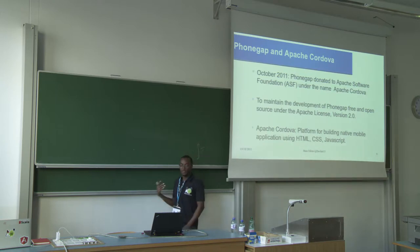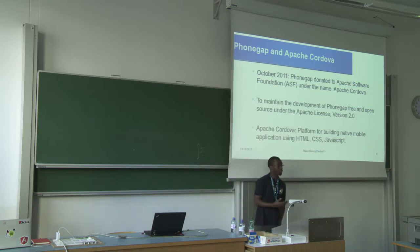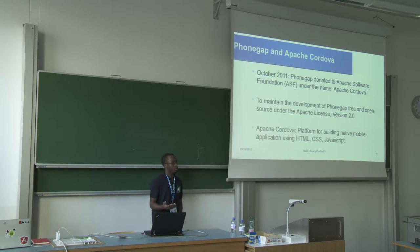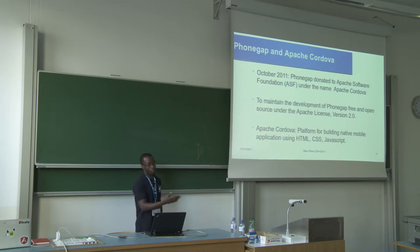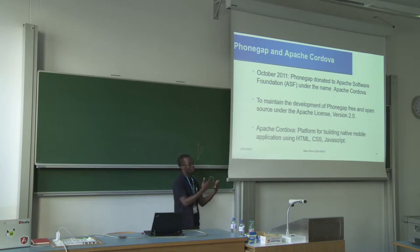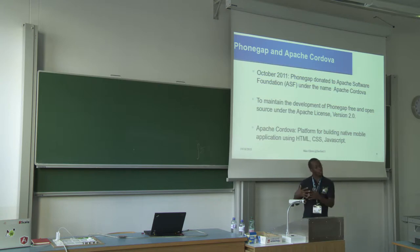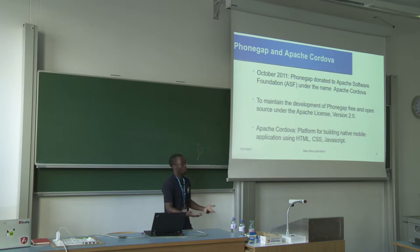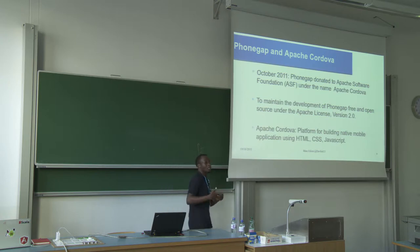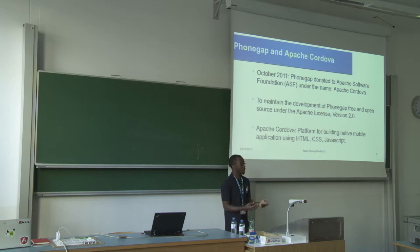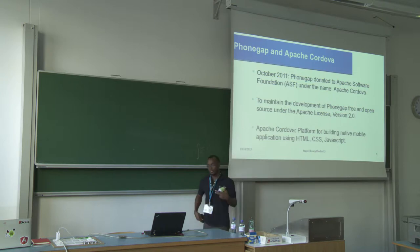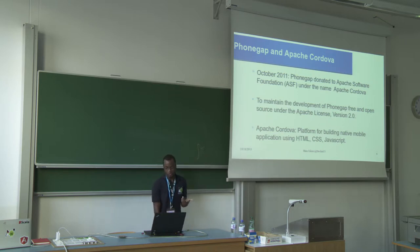Another important aspect is the relationship between PhoneGap and Apache Cordova. Some people know Apache Cordova, some people know PhoneGap, and at the end of the day they are the same thing. In October 2011, PhoneGap was committed to the Apache Software Foundation under the name Apache Cordova. The idea was to maintain PhoneGap as open source, and it is now available under version 2.0 of the Apache license.